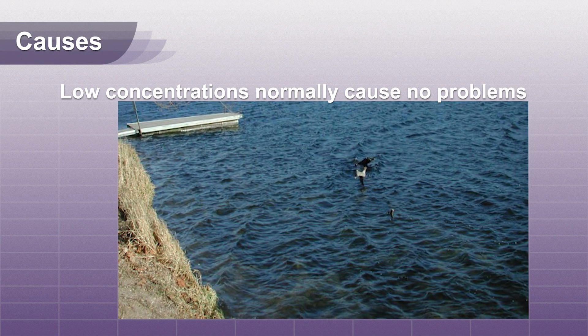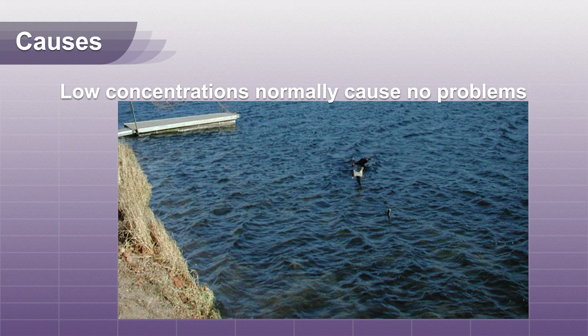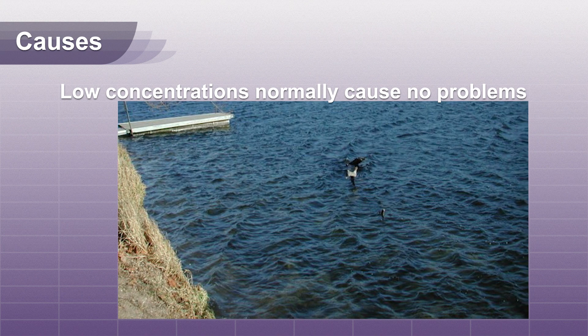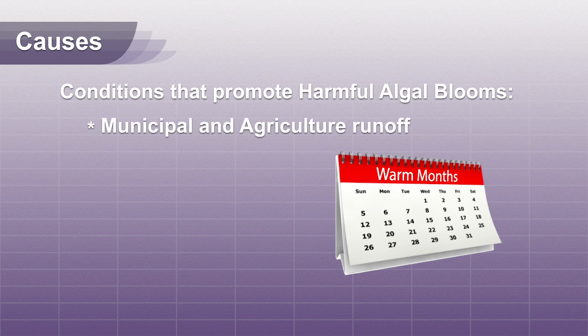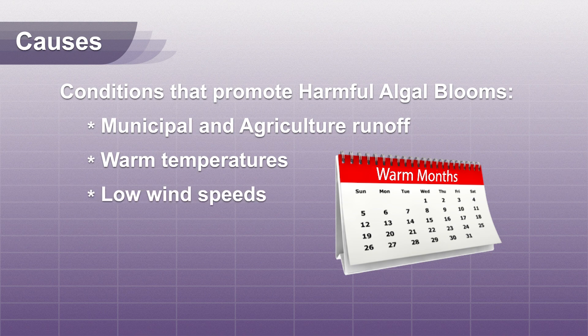Causes: Cyanobacteria live in surface waters in low concentrations and normally cause no problems. During certain weather conditions, these bacteria produce a harmful bloom where concentrations rise to a toxic level. These conditions include municipal and agricultural runoffs, warm temperatures in late summer and early fall, and low wind speeds.